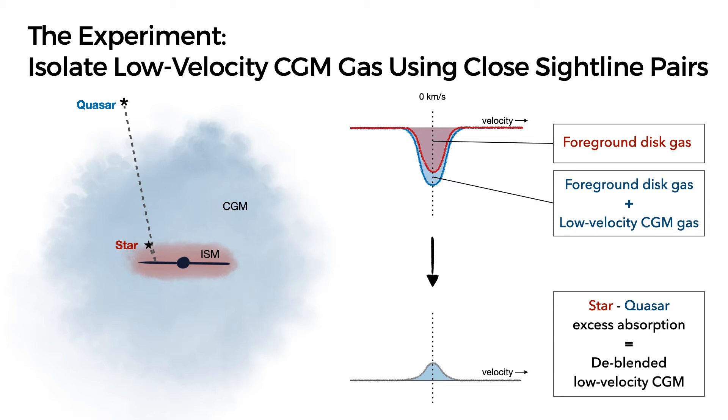We're left with a difference spectrum, like this one on the bottom, which is showing us how much absorption originates from gas in the CGM beyond the halostar.